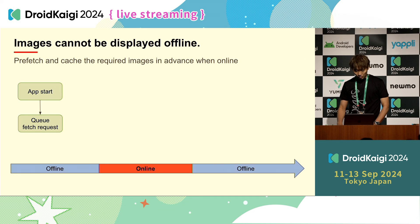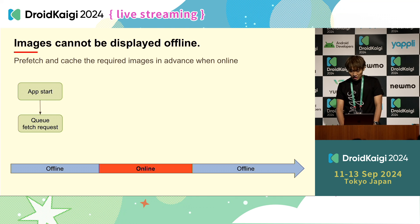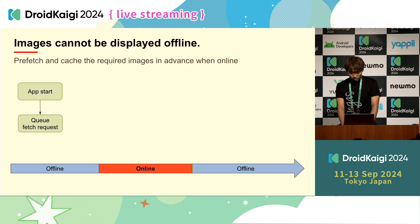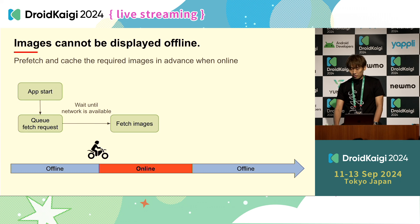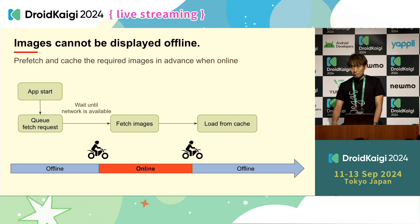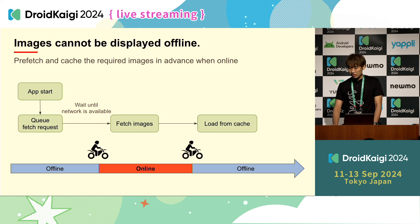To solve this issue, we prefetch and cache the required images in advance when online. The fetch request is queued when the app is launched and waits until the network is available. Once the app connects to the network, it starts to fetch images in the background. Then images can be loaded offline. If the fetch fails due to a timeout or loss of internet connection, the fetch will be performed again when it comes back online.